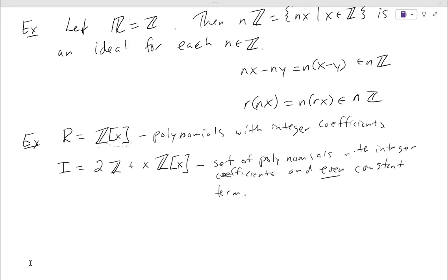So we just started talking about ideals last time. I'll do several examples of those, do some properties of ideals, and then talk about how we can create new rings from old rings using ideals, and then connect the ideas of homomorphism and ideals together. That's kind of where we're headed — we probably won't get through all of that today.